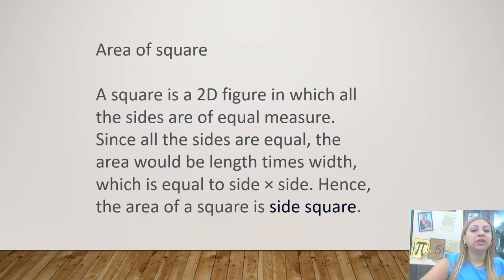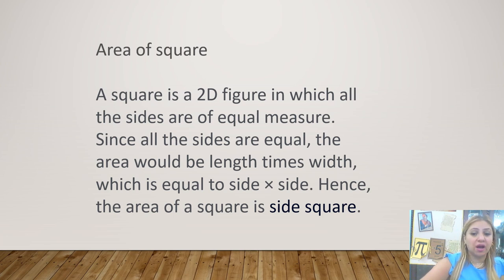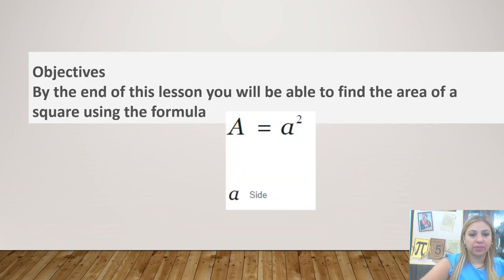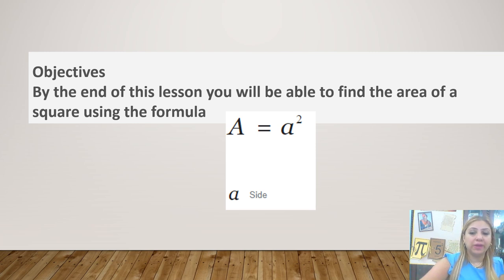We will learn also about area of a square. A square is a 2D figure in which all the sides are of equal measure. Since all the sides are equal, the area would be length times width, which is equal to side times side — the area of a square is side squared. By the end of this lesson, you will be able to find the area of a square using the formula: area equals side squared.